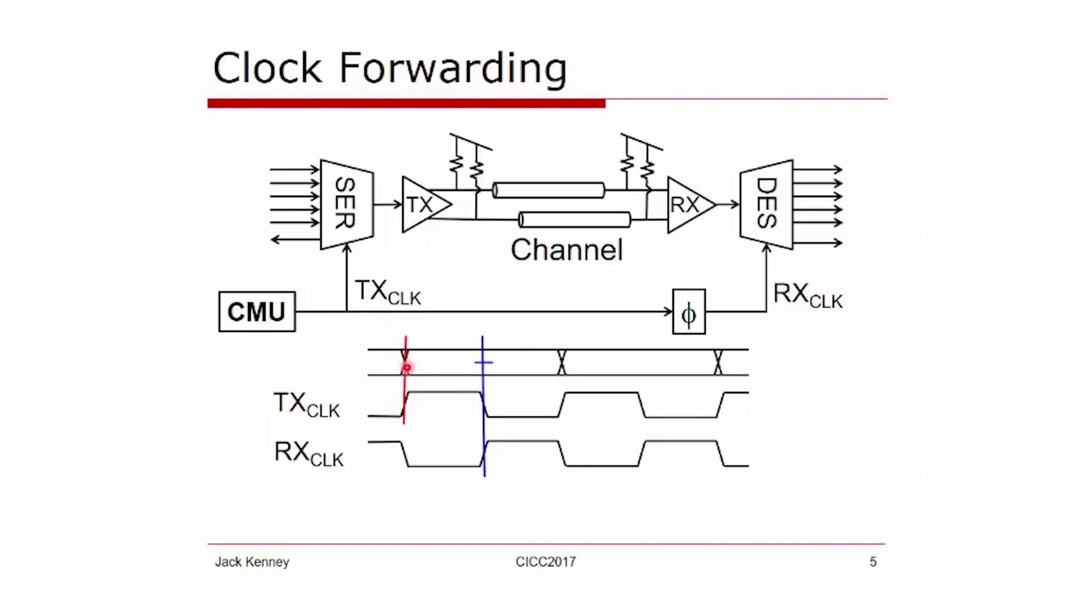One advantage of clock forwarding is that if there's jitter on the transmit clock, it will appear on the data edge. But since the receive clock is just a delayed version of the transmit clock, the receive clock moves in unison and the system works well.